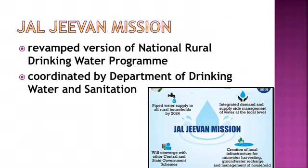Let us look into Jal Jeevan Mission. This scheme is a revamped version of the National Rural Drinking Water Programme (NRDWP), launched in 2009. It aims to provide functional household tap connection (FHTC) to every rural household — Har ghar nal se jal — supplying water at 55 litres per person per day by 2024.